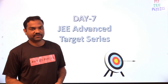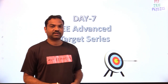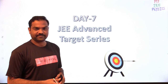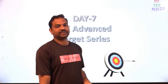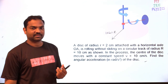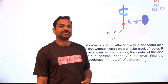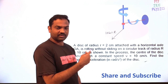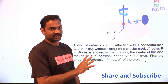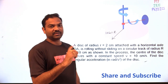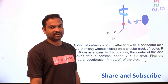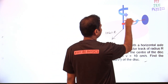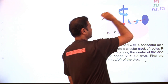Hello everyone, welcome back to MyJA Physics channel. We are in the target advanced series. In this we are going to see one favorite topic for JEE Advanced examination — that is precession. An object will revolve and rotate at the same time, like the earth revolves around the sun while also rotating. Similarly, this disc is rotating and revolving at the same time.